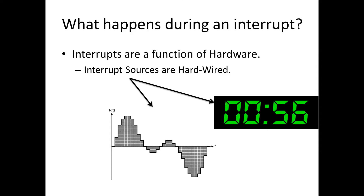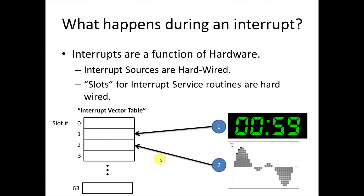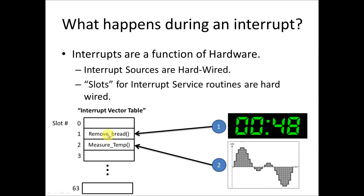So what happens during an interrupt? Interrupts as a system are a function of hardware. Interrupt sources are hardwired — all peripherals, such as timers and analog-to-digital converters, are hardwired into the processor to generate interrupt requests. The slots for functions associated with interrupt service routines are also hardwired. So when a timer ticks down and generates an interrupt, it always looks in slot 1. When an analog-to-digital conversion is complete, it might look in slot 2. These slot numbers are just examples, but every interrupt source has a dedicated slot where we store the function to execute.